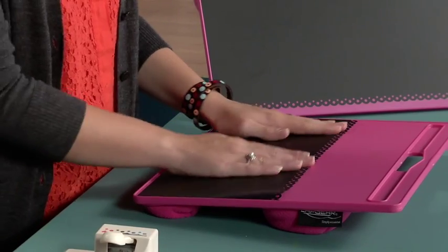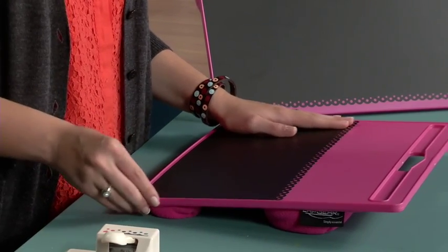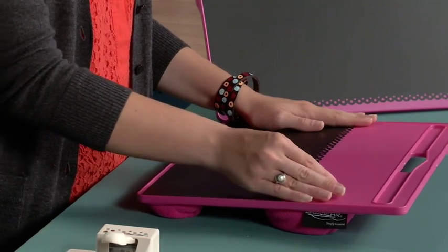This chalkboard paper is a wonderful product because it has self-adhesive backing. This is a great alternative to chalkboard paint or chalkboard paper where you'd have to apply your own adhesive.